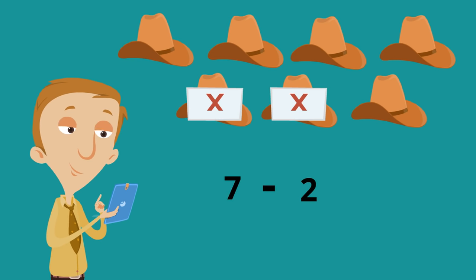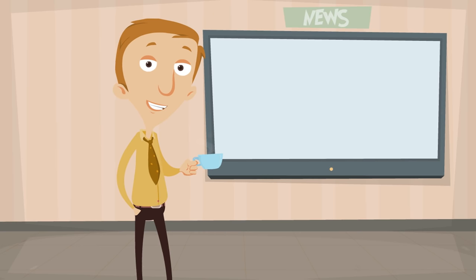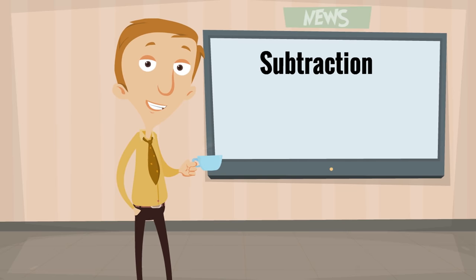What is 7 minus 2? If you need help, you can just count how many hats are left. 7 minus 2 equals 5. Yeah, five hats. And you can even count them: one, two, three, four, five. There are five hats left. 7 minus 2 equals 5.